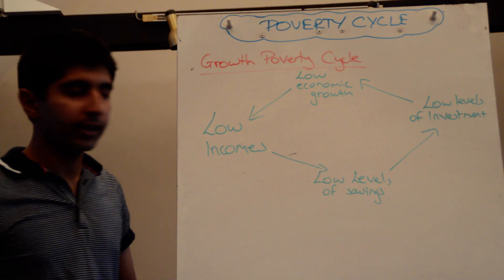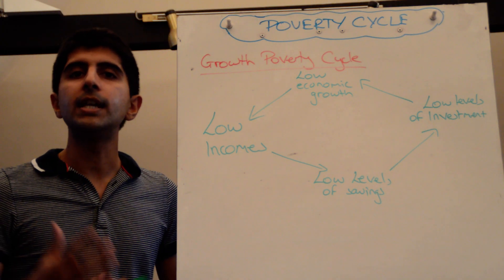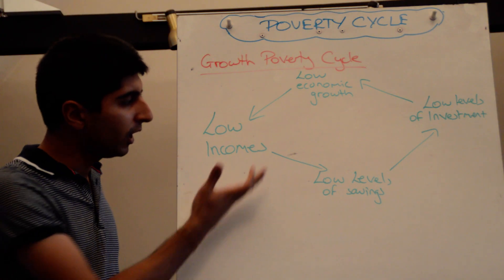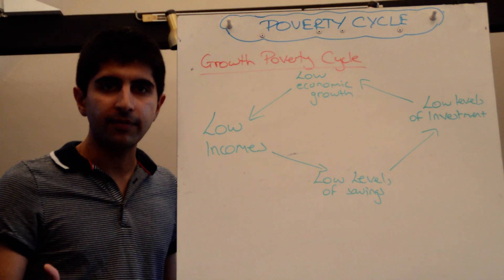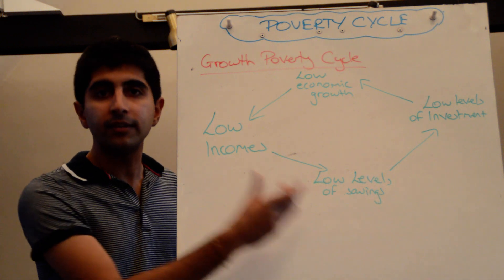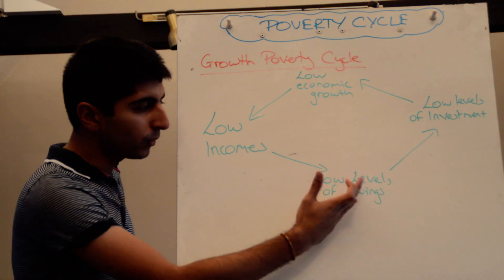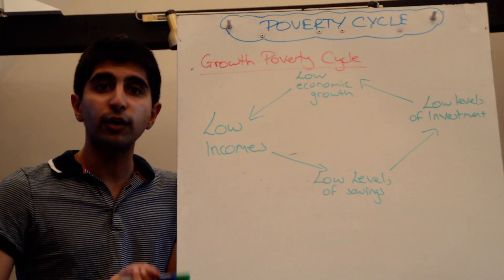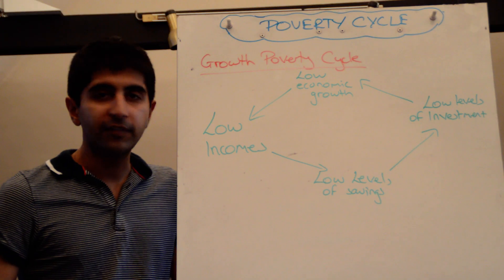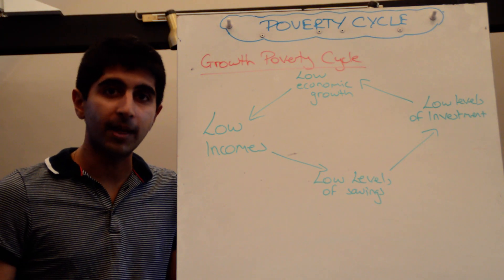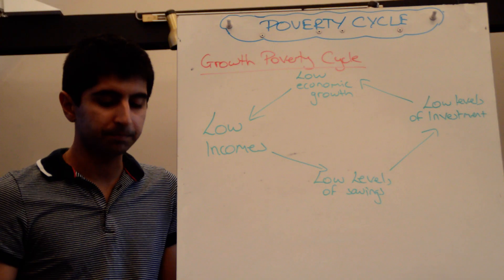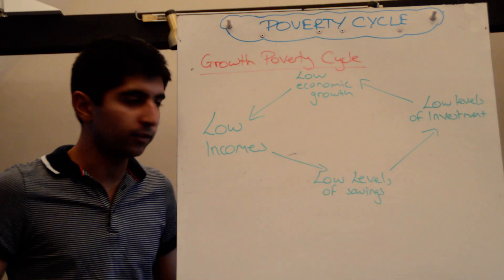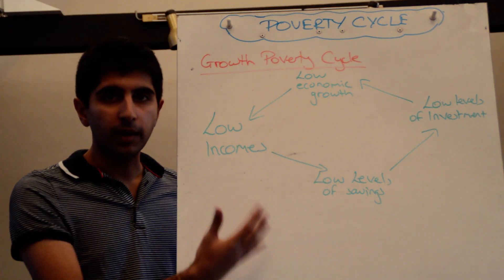Let's look at the growth poverty cycle. It all starts with low incomes — if you're in poverty, you must be having very low incomes. Low incomes will mean that there are going to be lower levels of savings. We know that a determinant of savings is the level of income. But as well as that, there are no financial institutions potentially available in developing countries for people to save their money, and there is no education as to how that money can be saved. So low incomes can lead to low levels of savings.